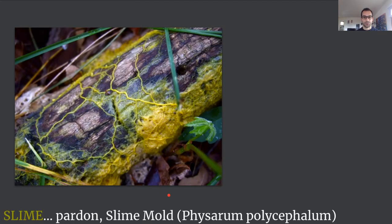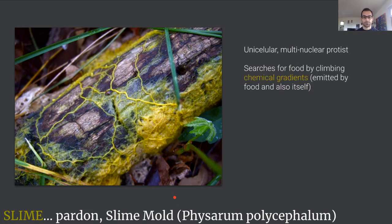To aid us in this challenge we took advantage of the slime mold. The slime mold as you might know is a unicellular organism, a protist which means it's a very old organism. The unique thing that slime mold does is that it searches its environment for sources of food by climbing chemical gradients emitted by food. In doing so it actually grows its body in various directions.